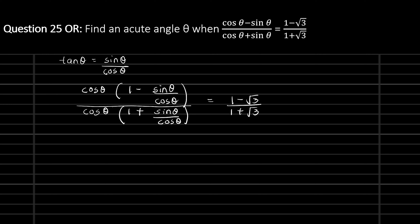Now cos theta and cos theta can be simplified, and we can write (1 minus sine theta upon cos theta) as (1 minus tan theta), and (1 plus sine theta upon cos theta) as (1 plus tan theta), which equals (1 minus root 3) upon (1 plus root 3).